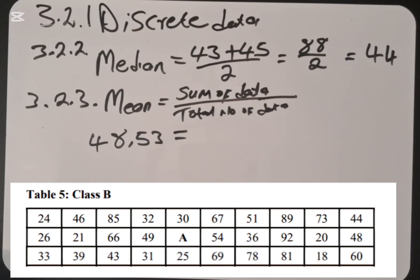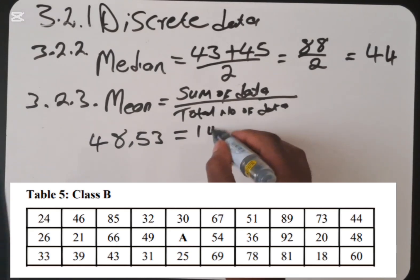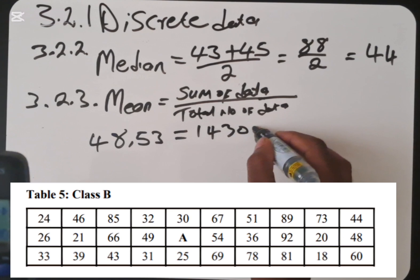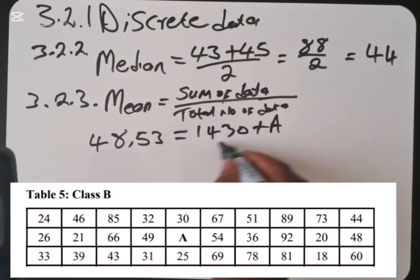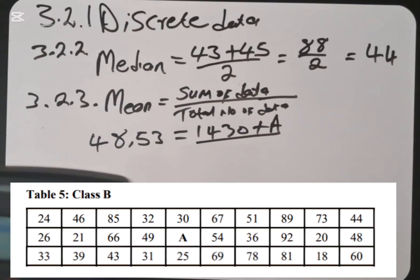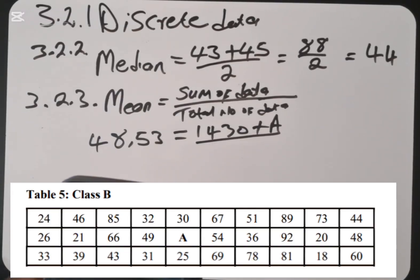So when you add everything, you take your calculator. With a calculator, let's begin to add everything together. I find that my answer is 1480. I got 1480 plus A, which is divided by what? How many data do we have? We are having 30. Divide by 30.